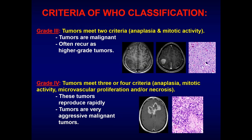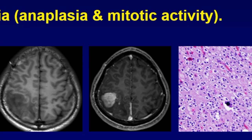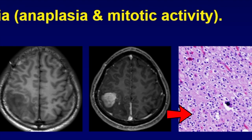In grade 3, there are two criteria — mainly anaplasia and mitotic activity. These tend to be anaplastic astrocytomas and are significantly more aggressive tumors. They are almost always malignant and almost always tend to recur, but there is not much necrosis or hemorrhage. This tumor in the right parietal lobe shows peritumoral edema, a wide zone of transition, not clearly demarcated as the prior two, and on contrast shows intense enhancement. The blue has markedly increased over the pink.